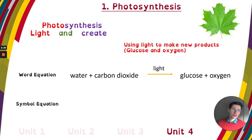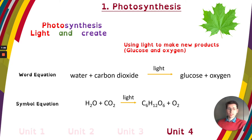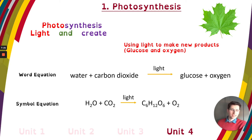If you're doing higher — and it wouldn't be a bad thing for foundation to know this too — the symbols: water is H₂O, carbon dioxide is CO₂. Leave light as light. Glucose is C₆H₁₂O₆ and oxygen is O₂. That's the unbalanced symbol equation. To balance it for higher or triple, you put a 6 in front of H₂O, CO₂, and O₂ — what I call the devil's equation because it ends up being 6, 6, 6. That's the equation for photosynthesis, with water and carbon dioxide as reactants, and glucose and oxygen as products.